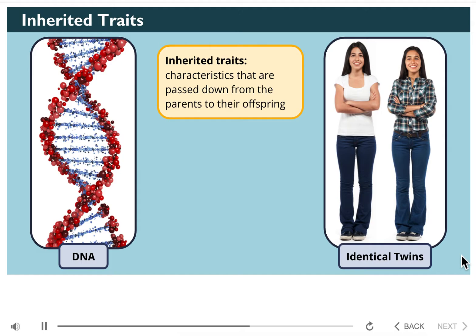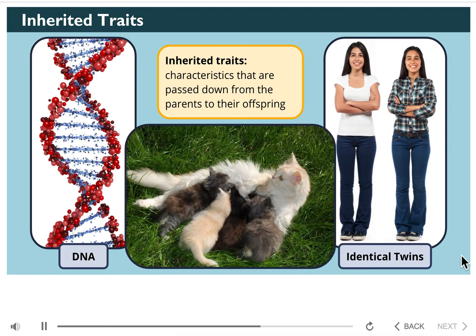DNA is found within the cells of your body. Look at this mother cat and her kittens. The kittens don't look just like their mother. This is because some traits come from the mother and some come from the father. Some traits are also acquired during an animal's lifetime — we'll discuss those types of traits later.